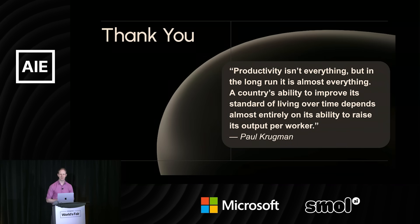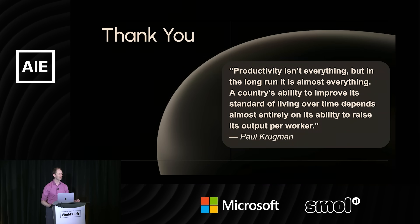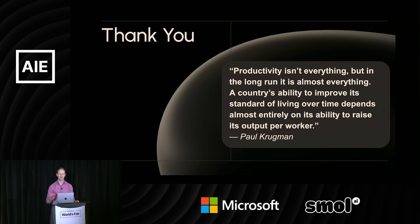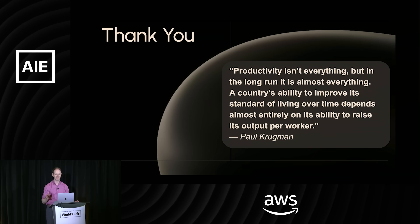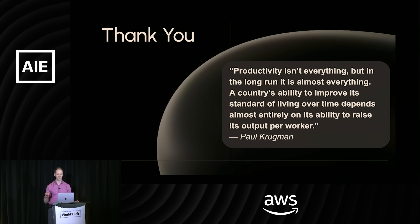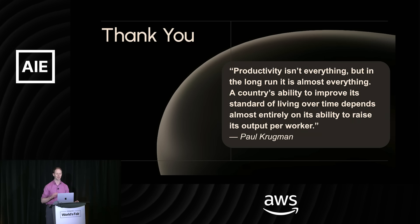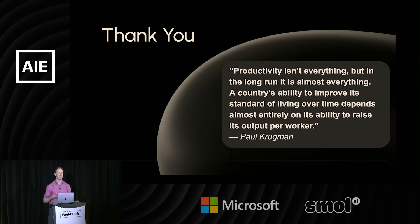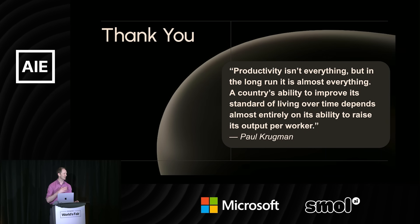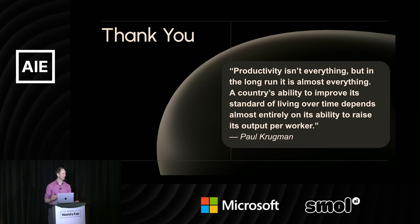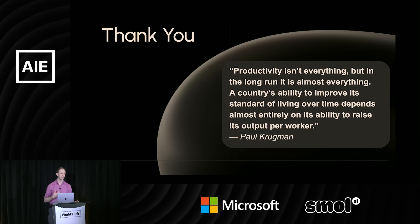This brings me to the end of my talk. I'll close with a quote I love from Paul Krugman: 'Productivity isn't everything. But in the long run, it is almost everything. A country's ability to improve its standard of living over time depends almost entirely on its ability to raise its output per worker.' I really think we're at the beginning of an upshift in the amount of work that every single one of us can accomplish, and I think this new design pattern for agents is going to help each of us accomplish more. Thank you so much.